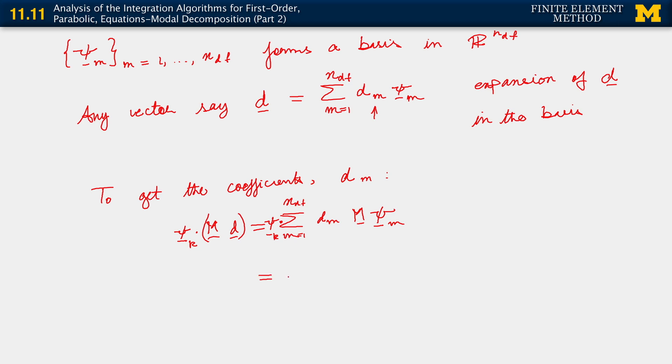What we get on the right-hand side is sum m equals 1 to n d f d m psi k dot m psi m. But then what is this? This is just delta k m. Where did that come from? From the fact that we've constructed the psi m's, that entire set of psi's, to be m orthonormal.